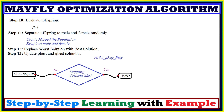In summary, this algorithm uses the nuptial dance and random walk to balance the exploration and exploitation phases and escape from local optima. The Mayfly Optimization Algorithm was tested on 38 benchmark functions and compared with seven algorithms, obtaining better results than the others. If you have any questions, please comment below, and thanks for watching.